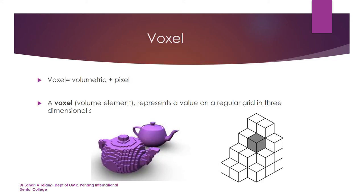Voxel, on the other hand, is a volumetric pixel. It has a volume element and represents a value on a regular grid in three dimensions. This image of a teapot, for example, is made up of tiny blocks like Lego — this is what we call a voxel. When you're looking at three-dimensional imaging, the term pixel is replaced by voxel.